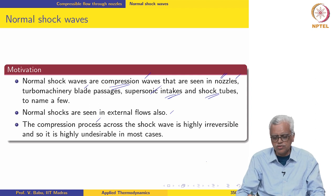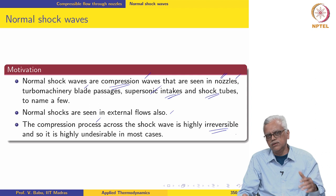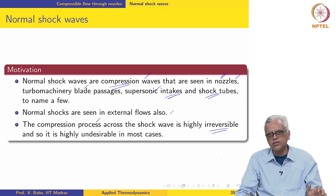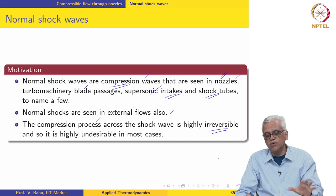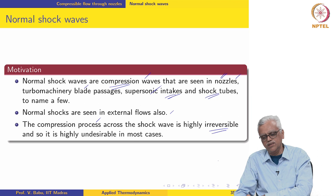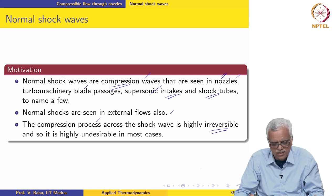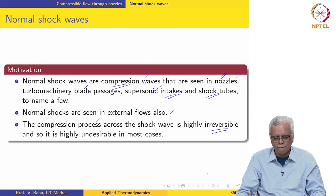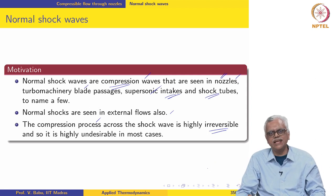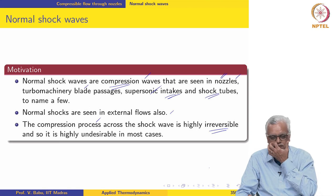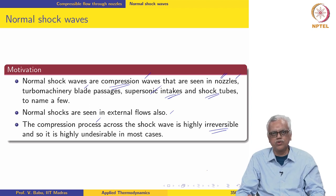The compression process across the shock wave is highly irreversible. As I mentioned in the previous lecture, any loss of stagnation pressure is tantamount to irreversibility, and irreversibility results in loss of exergy. So this is undesirable in most cases, although in some cases we can actually exploit the efficiency of the normal shock compression process.